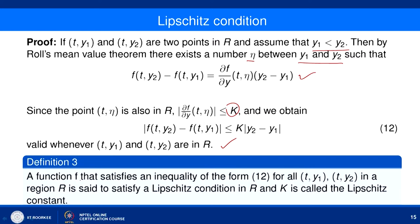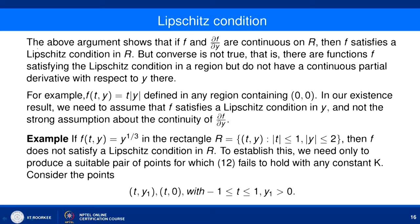A function f satisfying |f(t,y₂) - f(t,y₁)| ≤ K|y₂ - y₁| for all (t,y₁) and (t,y₂) in a region R is said to satisfy a Lipschitz condition in R, and K is called the Lipschitz constant. We have shown that if f and ∂f/∂y are continuous on R, then f satisfies the Lipschitz condition. However, the converse is not necessarily true.